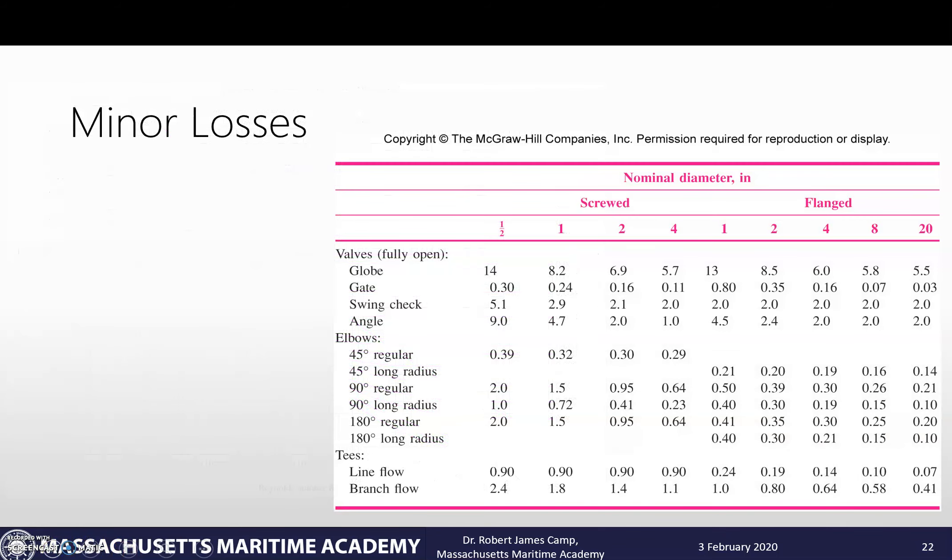From there we need to start looking at our minor losses. We've got all of our tables from the book here. We have a sharp entrance - that's a half. Sharp entrances are always a half.